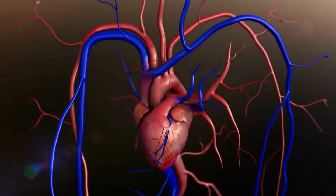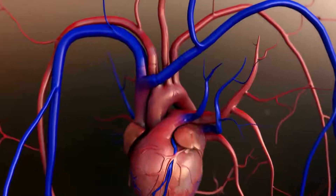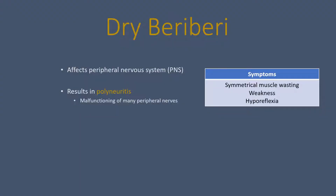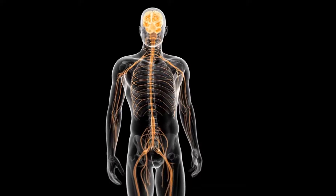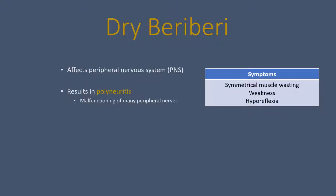Wet beriberi can cause dilated cardiomyopathy as well as systemic vasodilation, which can result in high-output cardiac failure, fluid retention, and ultimately edema. Dry beriberi affects the peripheral nervous system and can cause polyneuritis, where all your peripheral nerves start malfunctioning. Symptoms include symmetrical muscle wasting, weakness, and hyporeflexia.